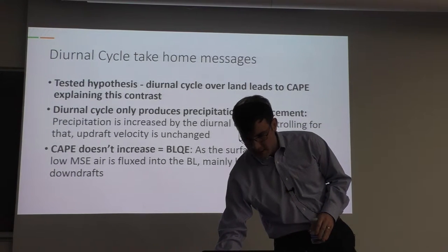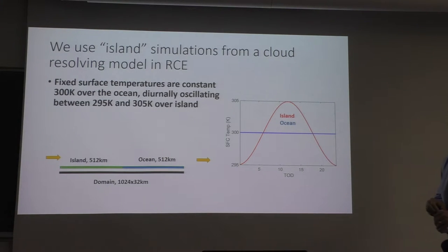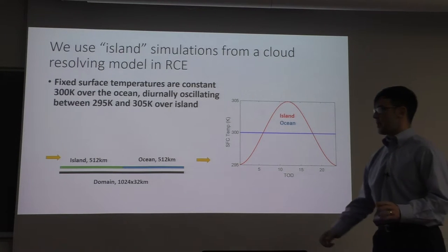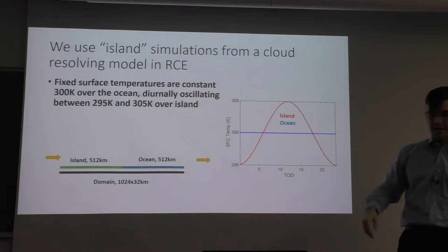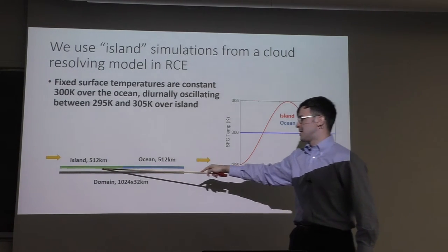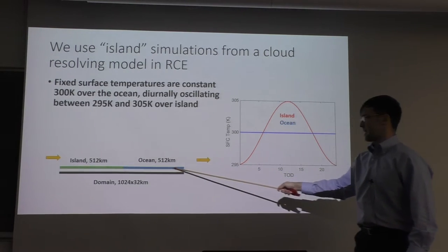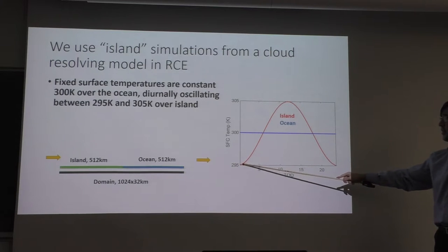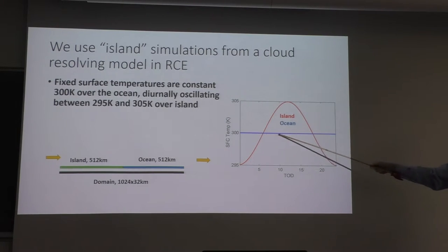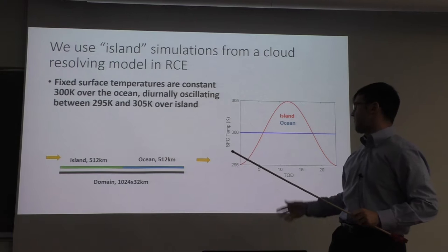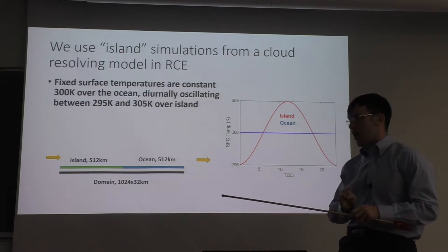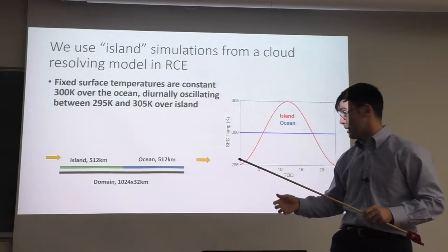How do we test this diurnal cycle mechanism? We use cloud-resolving model island simulations in radiative-convective equilibrium. The domain is a long narrow 'bowling alley' where half the domain is an island — 512 km in the x-direction of island and 512 km of ocean. By 'island' I mean the surface temperature varies with time of day while the ocean's surface temperature remains fixed. If oceanic convection influences the free troposphere, constant moisture, and a heating surface, we'd expect CAPE differences — but we do not see that.